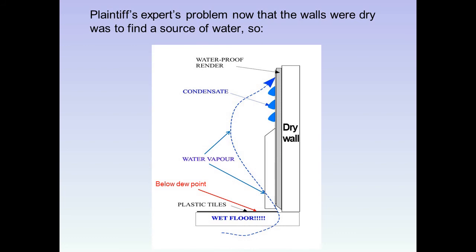The plaintiff's expert had to find a source of water. He proposed that water was coming from the floor-wall junction. We know the wall was dry — it was monitored and evaluated. So he was now claiming the floor was wet. However, the floor was set under plastic tiles and was also below the dew point. He was saying water was evaporating from a position where it should in fact be condensing, and escaping through a very narrow gap then condensing further up the wall. This is total nonsense.